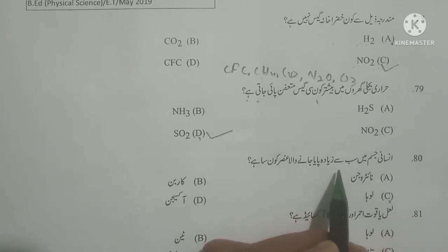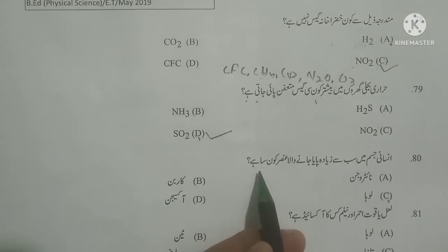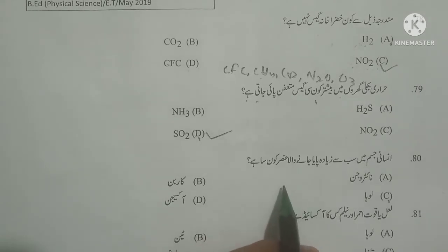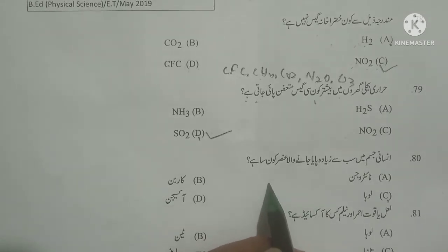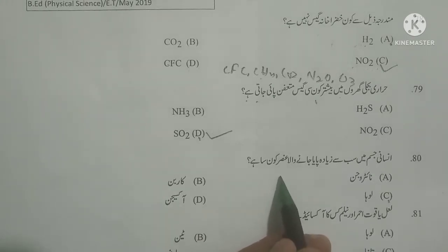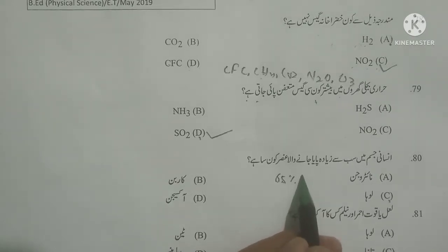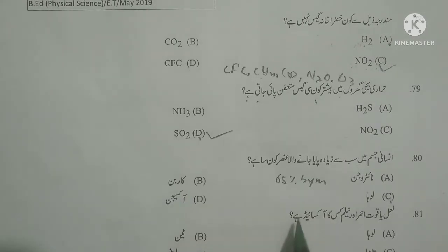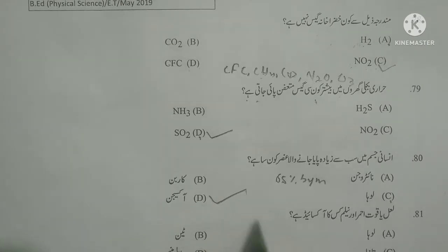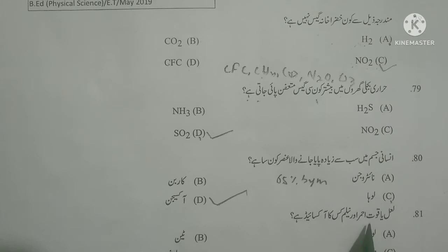Next question: Insani jism mein sabse zyada paaya jane wala ansur koon sa hai? What is the most common element found in the human body? As you know, oxygen is the most abundant element in the human body at 65% by mass. Oxygen is correct.